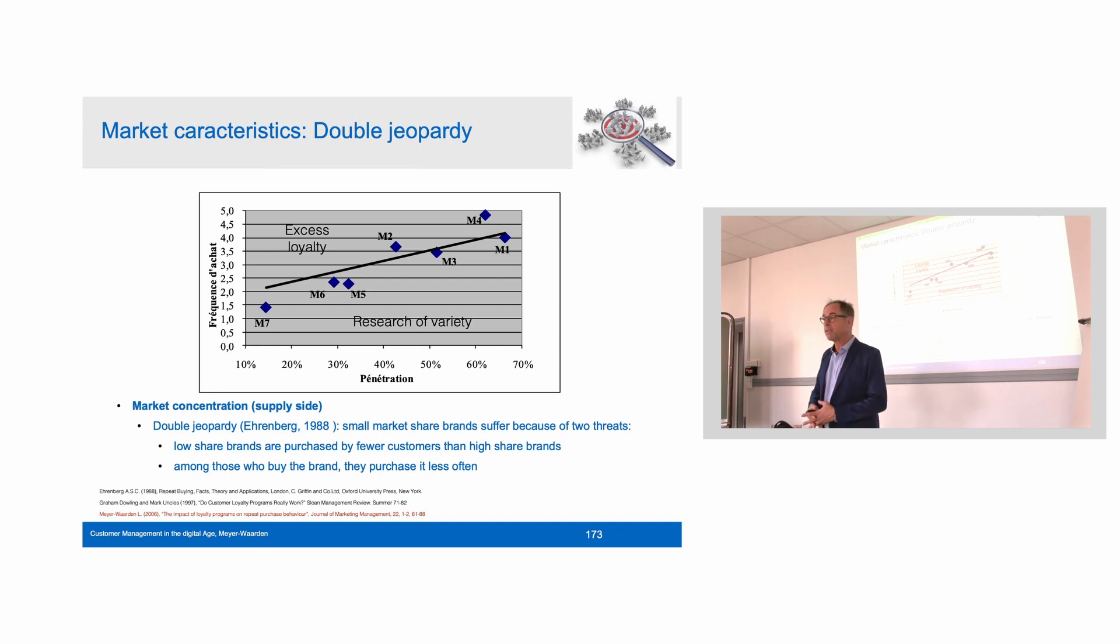This is the double jeopardy law, which is actually one of few laws we have in marketing. It can be observed in every sector. It's actually measured with a model called the Dirichlet model, which is used in panel data. Ehrenberg found in all markets this double jeopardy.